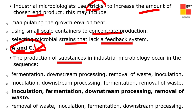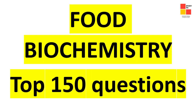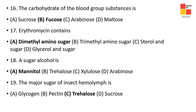The production of substances in industrial microbiology occurs in the sequence: sterilization, inoculation, fermentation, downstream processing, and removal of waste. In batch fermentation, substrates are added to the system all at once and the process runs until the product is harvested. Secondary metabolites are byproducts of metabolism that are not important to microbe function.